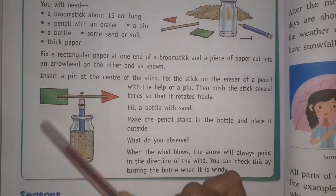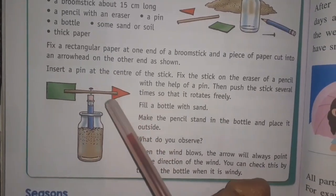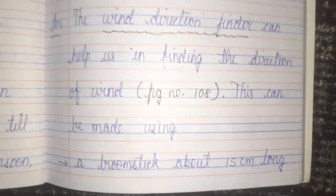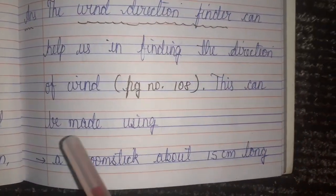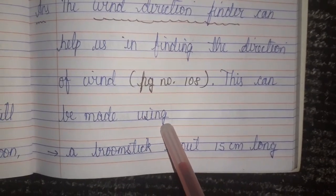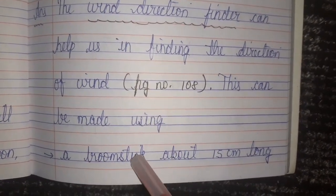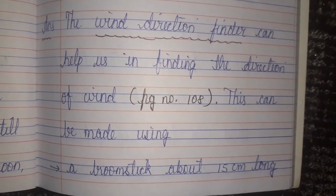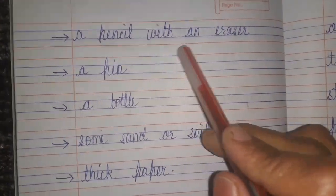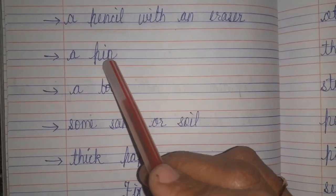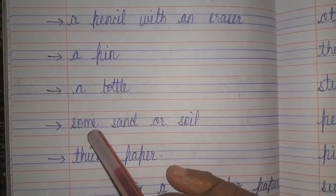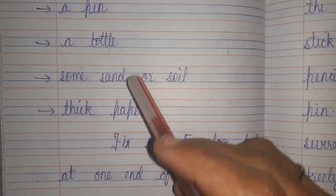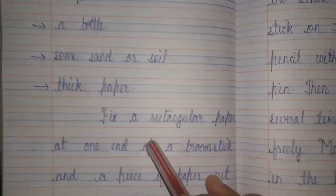This is called a wind direction finder. To make it, you need: a broom stick about 15 cm long, a pencil with an eraser, a pin, a bottle, some sand or soil, and thick paper.